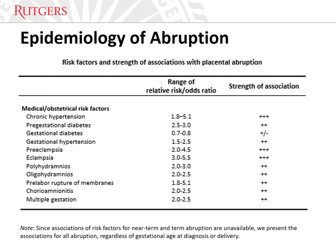Clinical and non-clinical risk factors and their strengths of association with abruption are summarized here and on the following slide. Since associations of risk factors for near-term and term abruption are unavailable, we present the associations for all abruption, regardless of gestational age, diagnosis, or delivery. Pregnant people with abruption in one pregnancy carry up to a tenfold increased risk of recurrence in a subsequent pregnancy. The recurrence risk is 25-fold higher in a third pregnancy when two prior pregnancies are complicated by abruption. The risk of abruption is three- to four-fold higher among pregnant people with chronic hypertension and four- to six-fold higher among those with preeclampsia, particularly preeclampsia with severe features and superimposed preeclampsia. Other clinical risk factors include pregestational and gestational diabetes, preterm prelabor rupture of membranes, chorioamnionitis, and oligohydramnios.